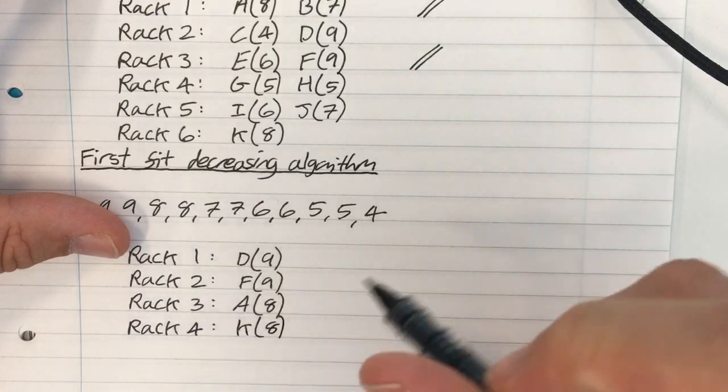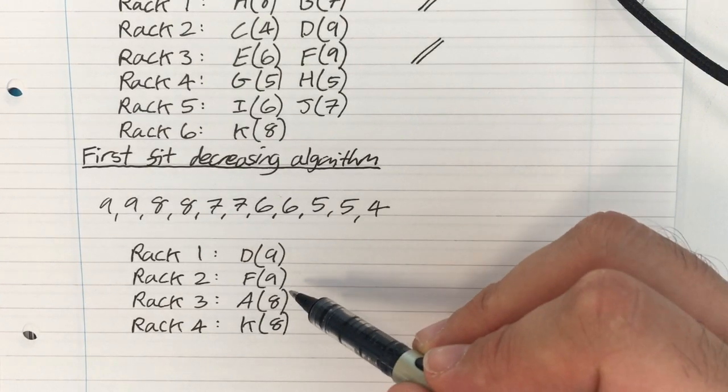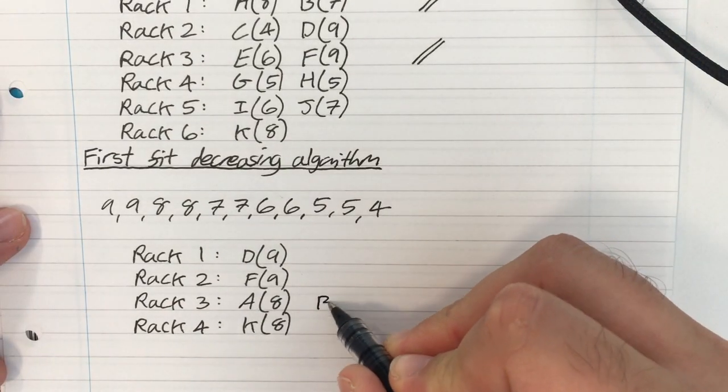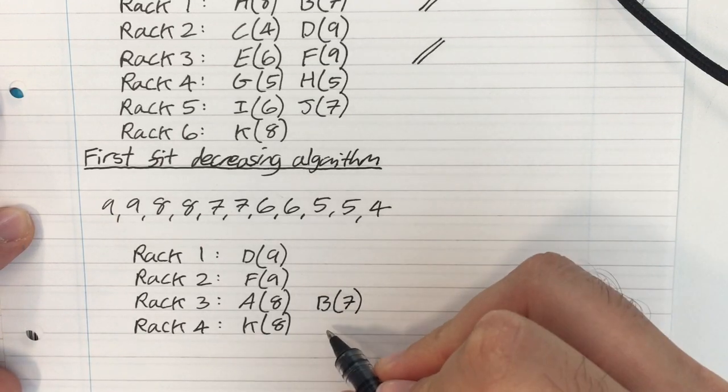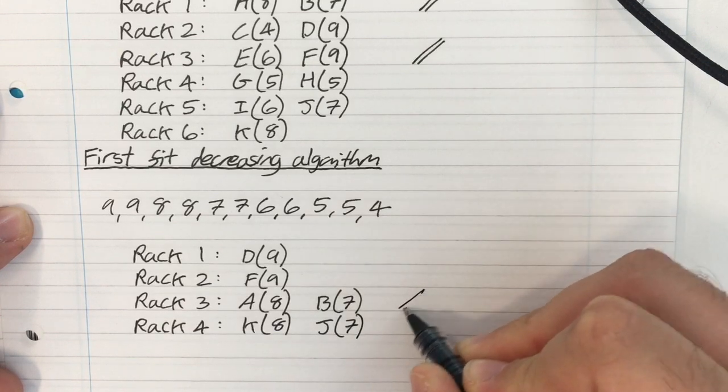I then pick up the next biggest, which is B, which is 7. It doesn't fit in rack 1, doesn't fit in rack 2, but it does fit in rack 3. So I'm going to put B, which is 7 in rack 3. Pick up J next. That's going to go in rack 4. Okay, those two are now full.